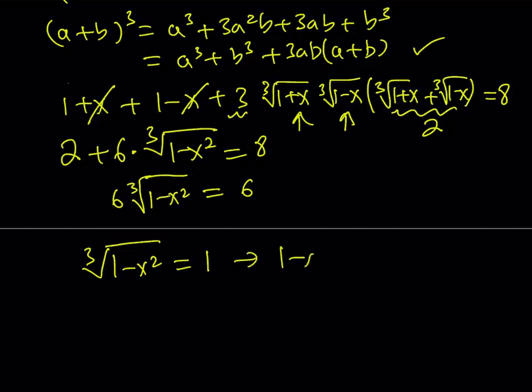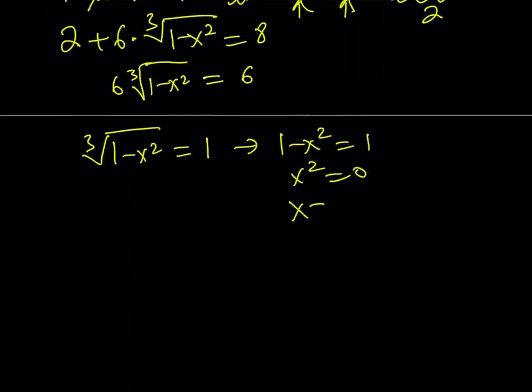If you cube both sides, you get 1 minus x squared equals 1, and x squared equals 0. And this gives us x equals 0 as the only solution. Alright.